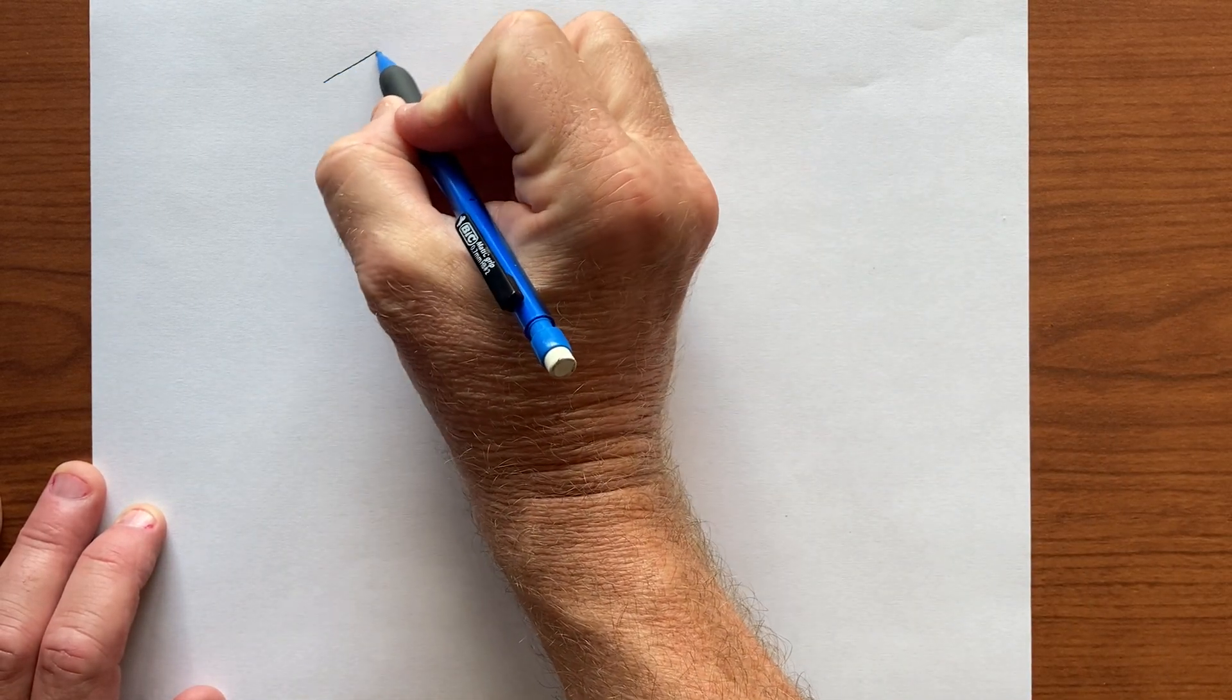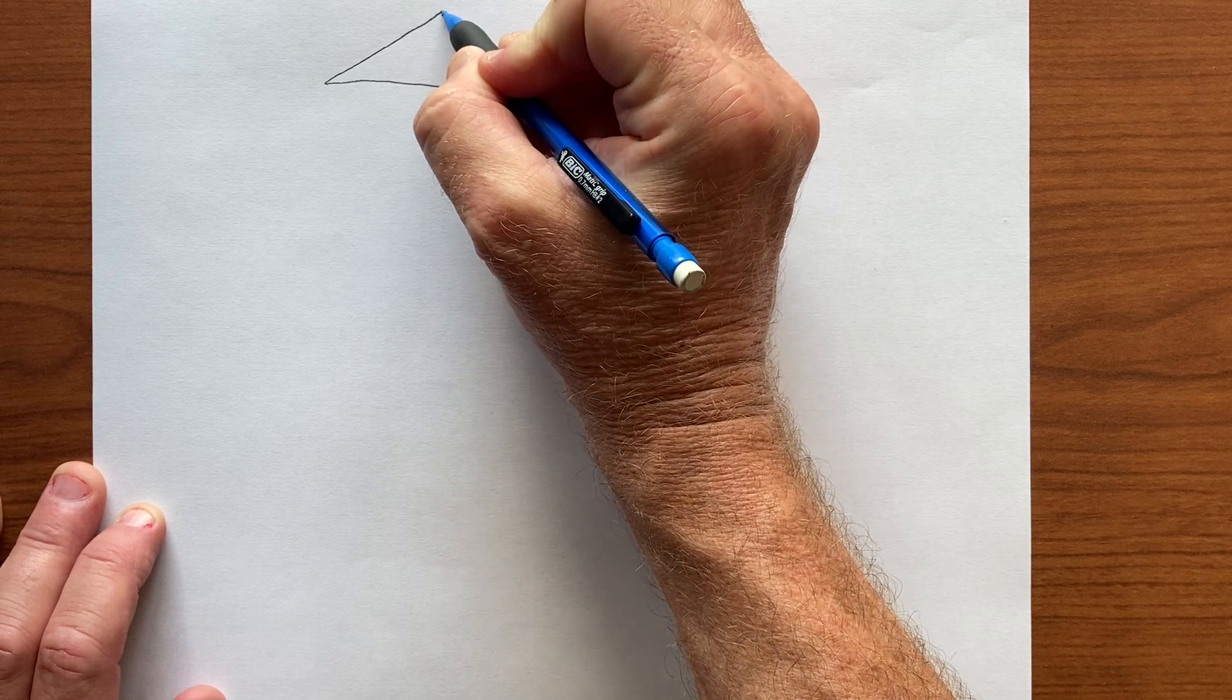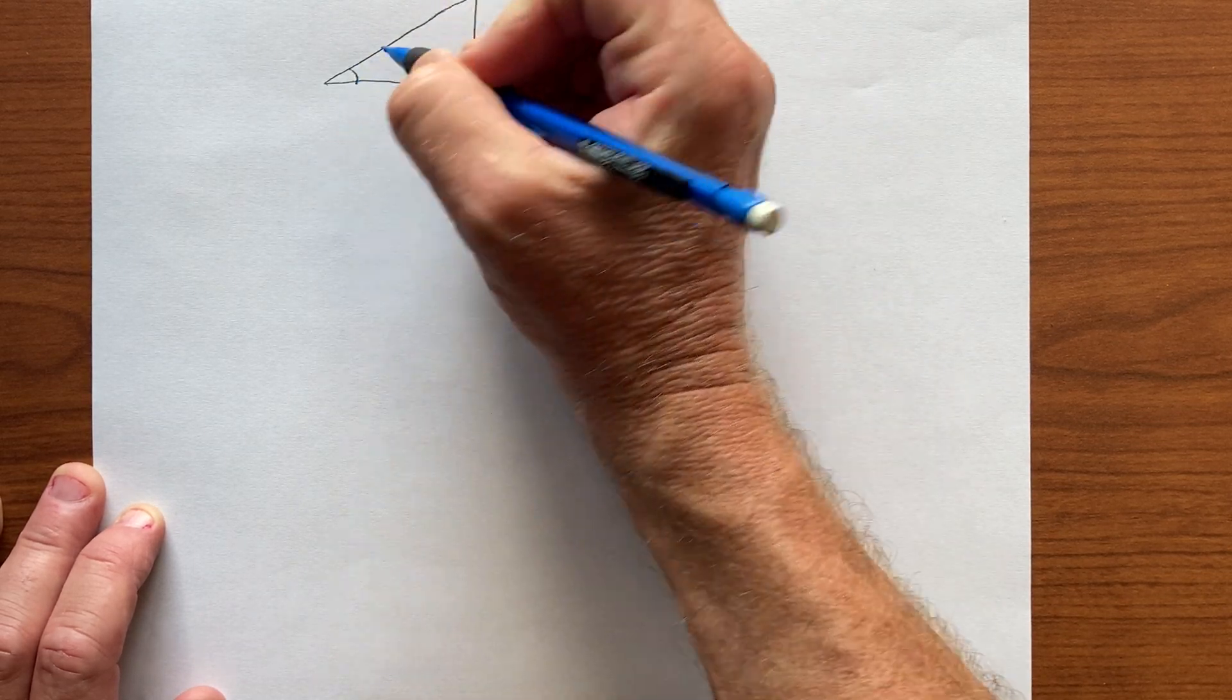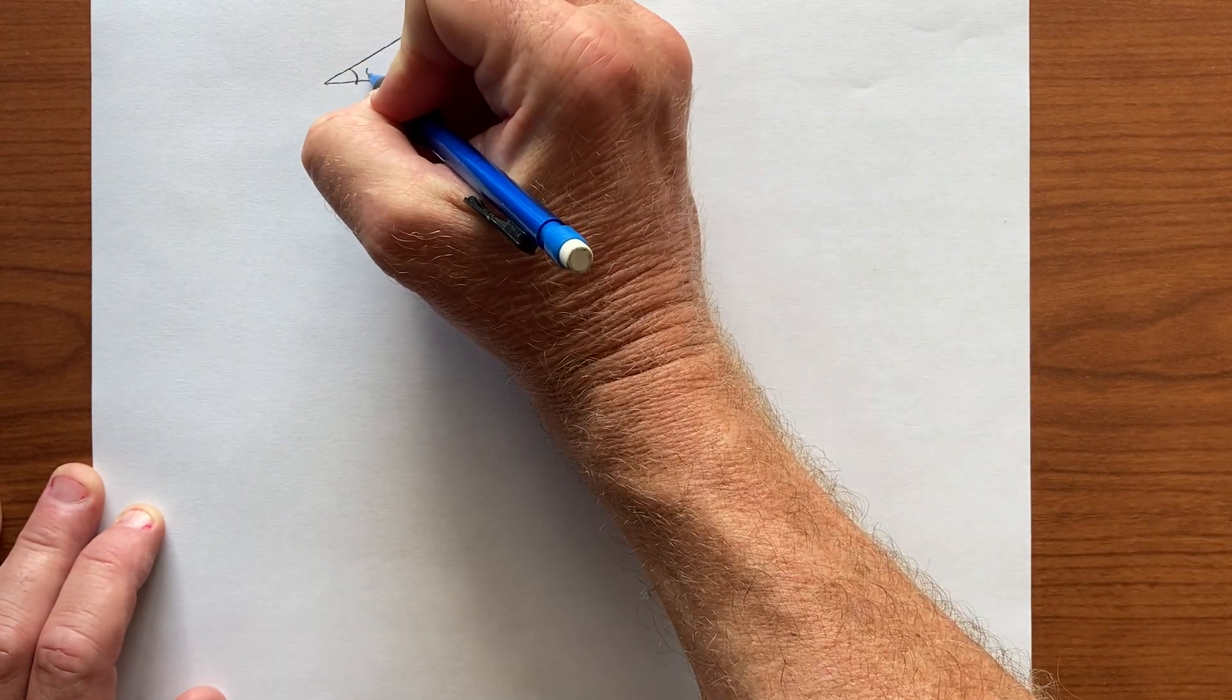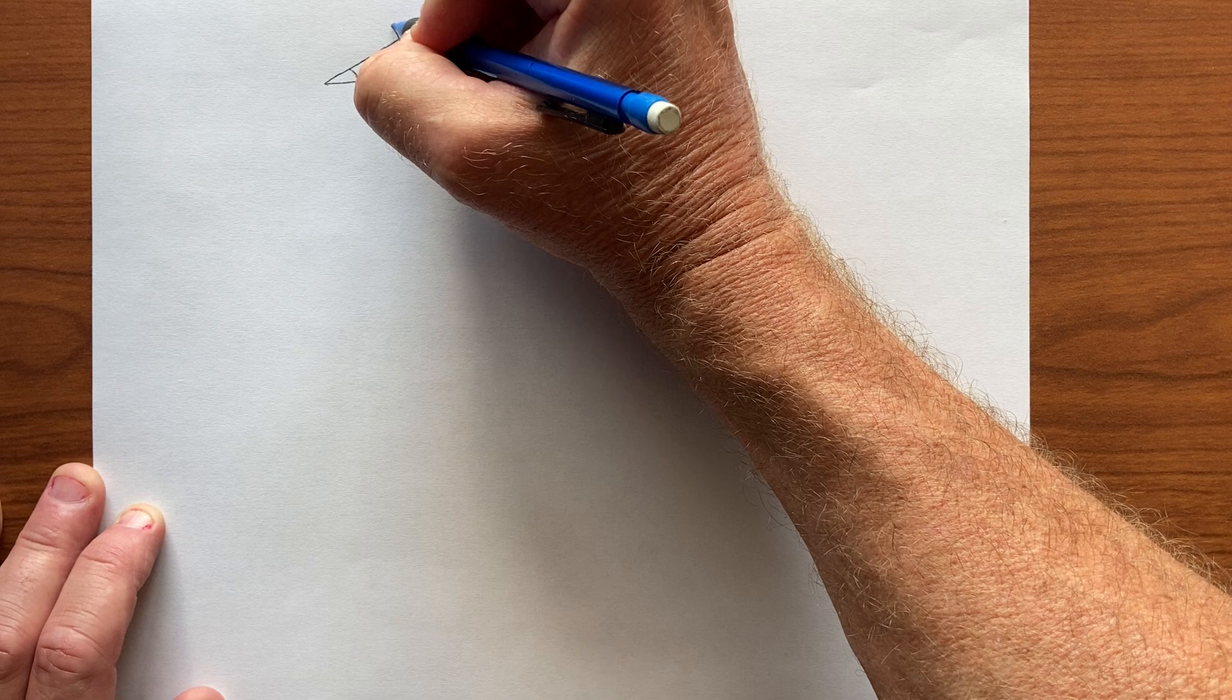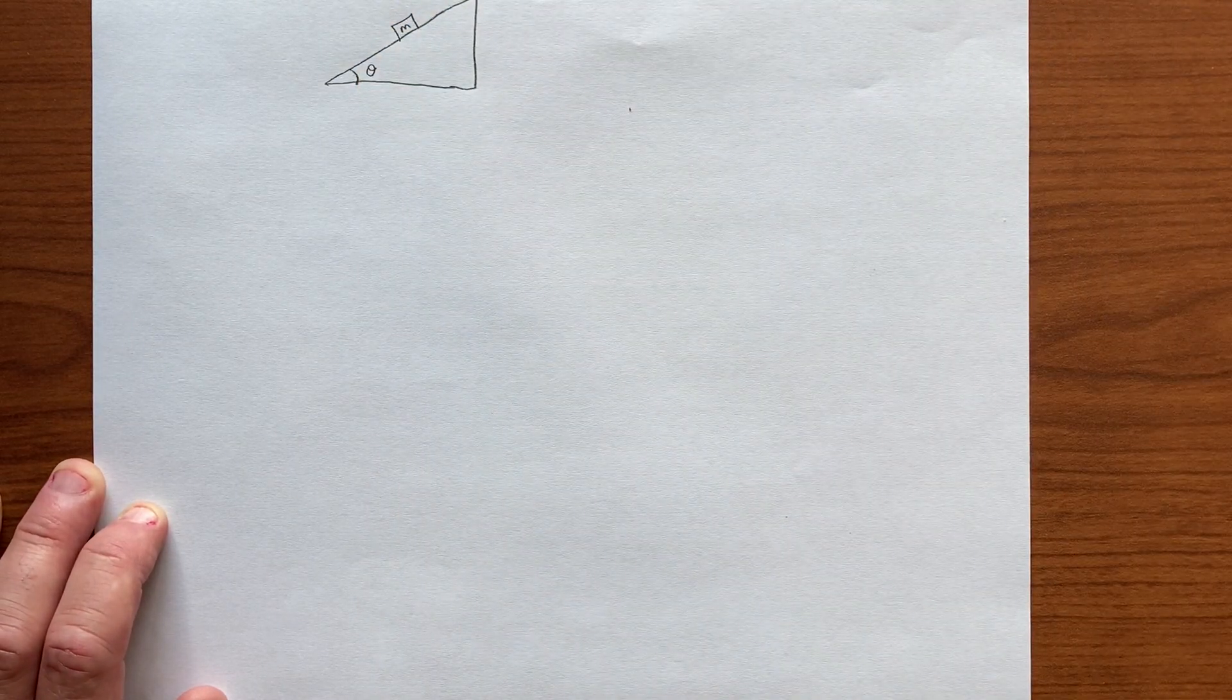So let's put an object again on an inclined plane, as we saw before. The inclined plane has angle theta, and the object, here it is, with mass m on the inclined plane.